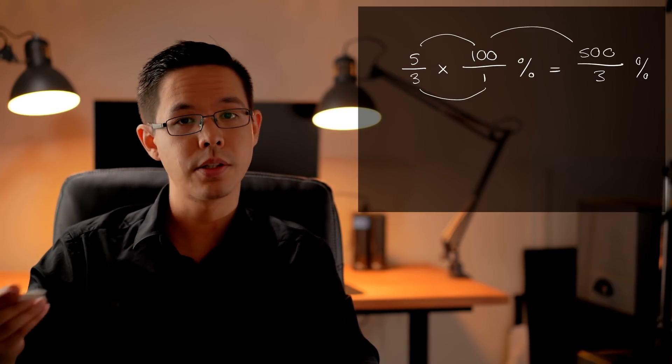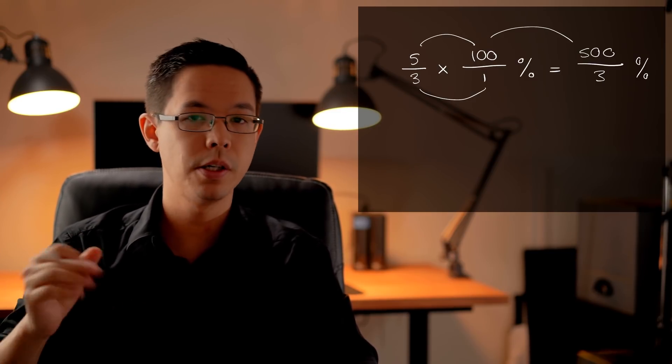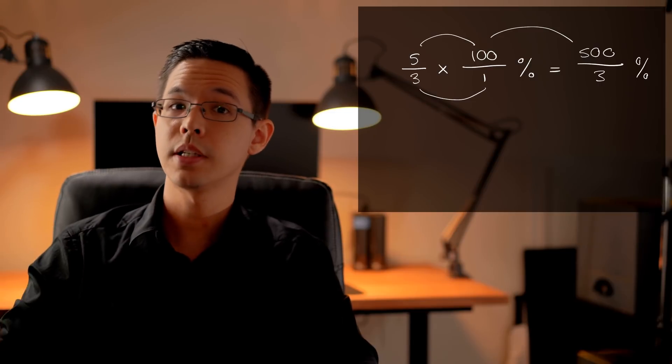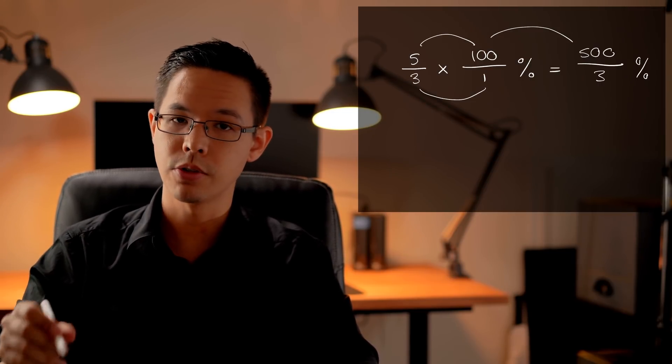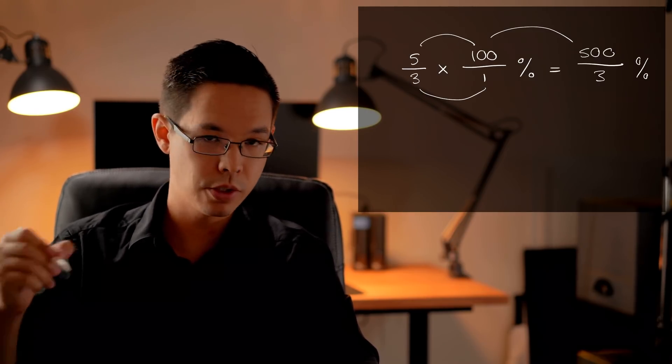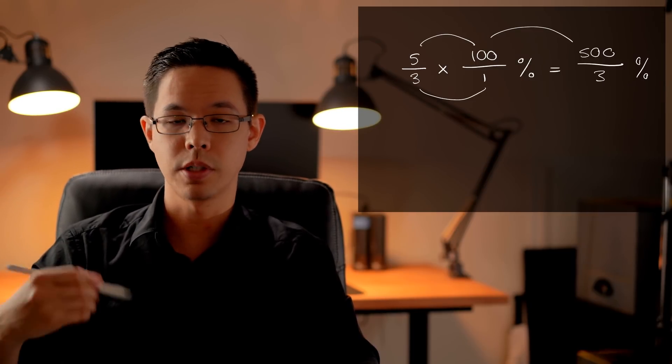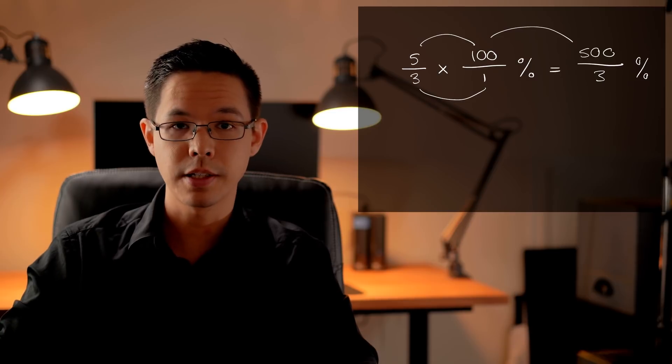From here to get to my answer I need to convert this fraction into a decimal and I'm going to do that by using the fact that a fraction is also a division symbol. So it's effectively 500 divided by 3. If I can do that division I can convert this into a decimal answer of percent which is the usual kind that we see percentages presented to us.